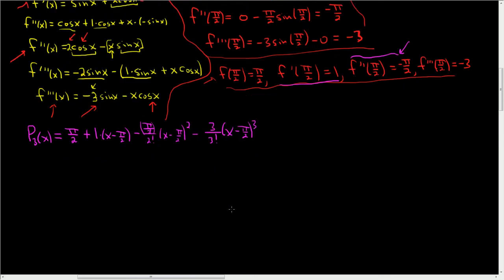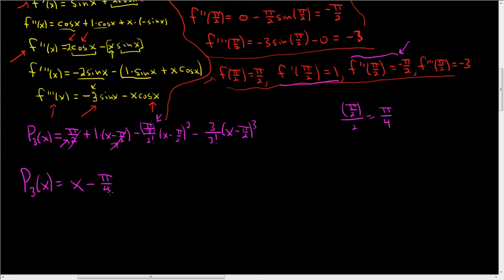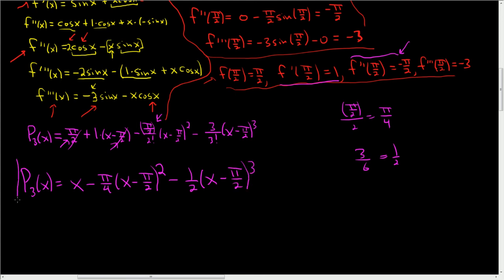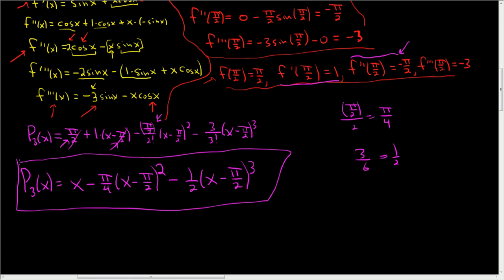Cleaning up: the pi over 2 constant and the negative pi over 2 from the linear term cancel, leaving just x. Negative pi over 2 divided by 2 factorial (which is 2) gives negative pi over 4. And negative 3 over 3 factorial (which is 6) gives negative 1 half. So p3 of x equals x minus pi over 4 times x minus pi over 2 squared, minus 1 half times x minus pi over 2 cubed. That is the third degree Taylor polynomial centered at pi over 2.